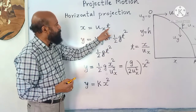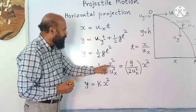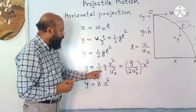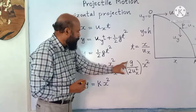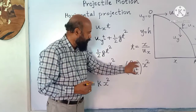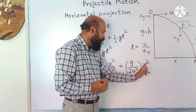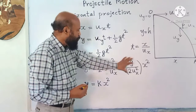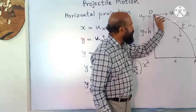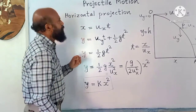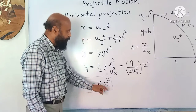From x = u_x · t, we get t = x / u_x. Substituting into y = ½g·t², we get y = ½g·(x/u_x)² = (g / 2u_x²)·x². Since g / 2u_x² is a constant k, we can write y = k·x². This is the equation of a parabola. The path traced by a projectile is called the trajectory, and the trajectory of a projectile is a parabola.